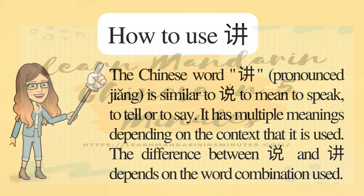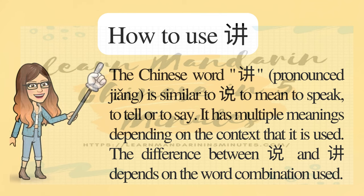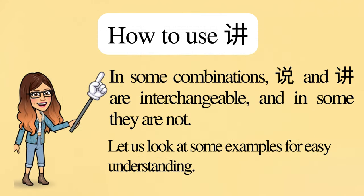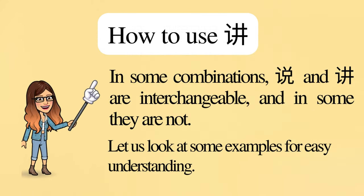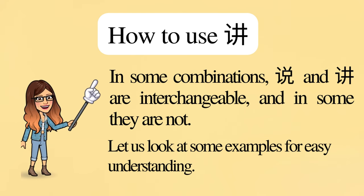The Chinese word 讲 is similar to 说, meaning 'to speak,' 'to tell,' or 'to say.' It has multiple meanings depending on the context. The difference between 说 and 讲 depends on the word combination used. In some combinations, 说 and 讲 are interchangeable, and in some, they are not.